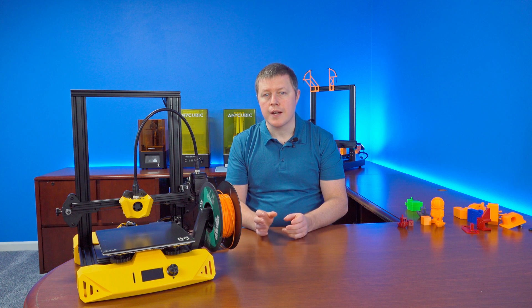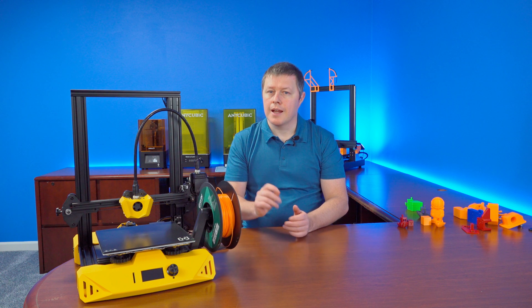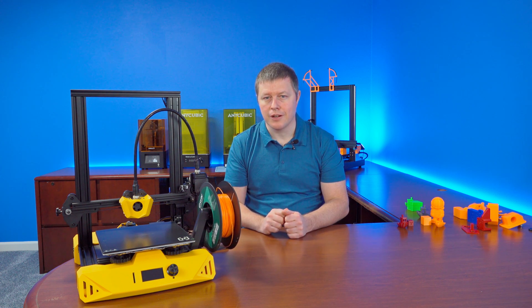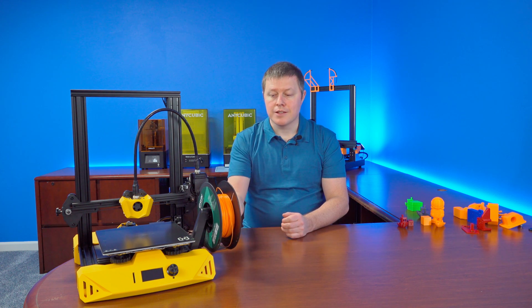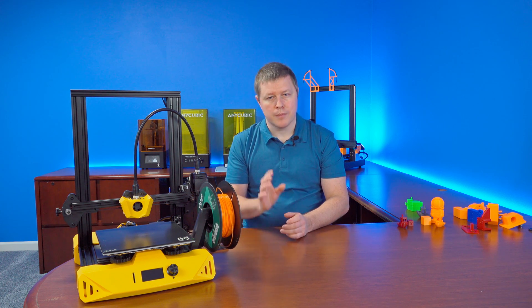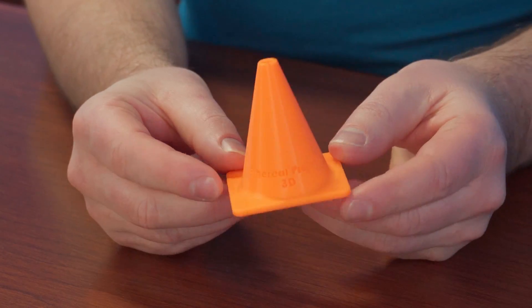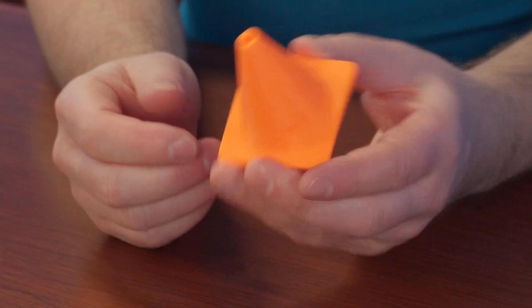I decided to try out the change filament feature and swap to this eSun Orange PLA Plus. And I gotta say, I think I have a new favorite color. My wife said that this color would make great traffic cones to go with our kid's toy dump truck. Boy, was she right. This little cone looks absolutely awesome in this color. And our kid loves them.